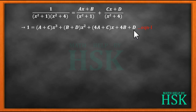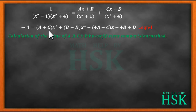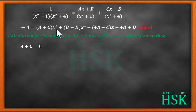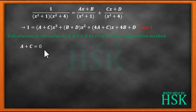Now using the coefficient comparison method, the first equation: on the left-hand side there is no x³ term, but the right-hand side has coefficient (a + c) for x³. So this implies a + c = 0.